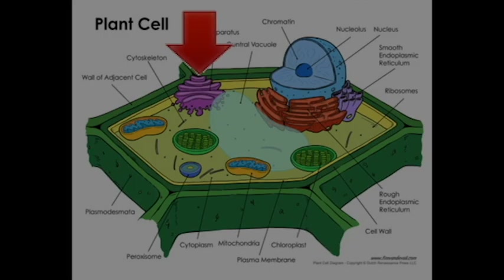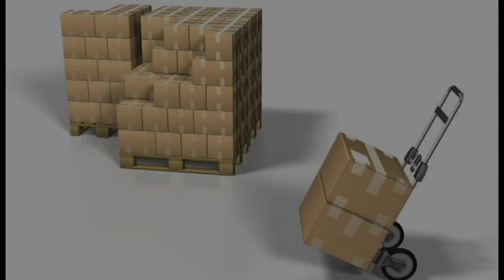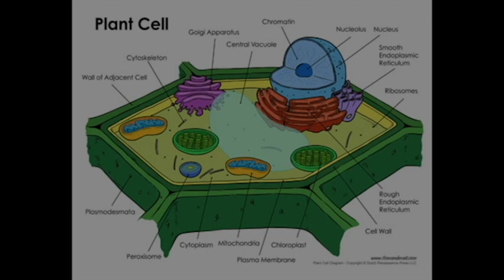Next is the Golgi apparatus. The Golgi apparatus acts as the packaging and distribution center of the cell. The function of the Golgi is to manage, package, and modify macromolecules and distribute it elsewhere in the cell to where it is needed.